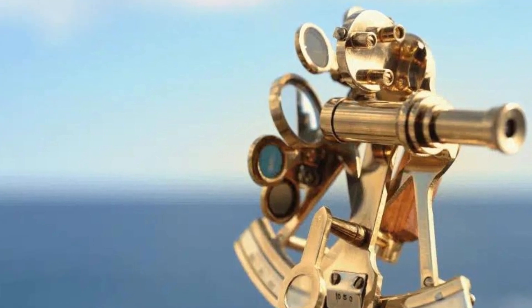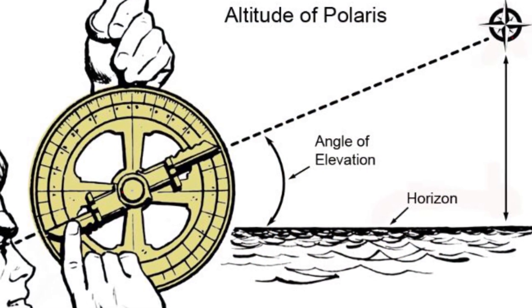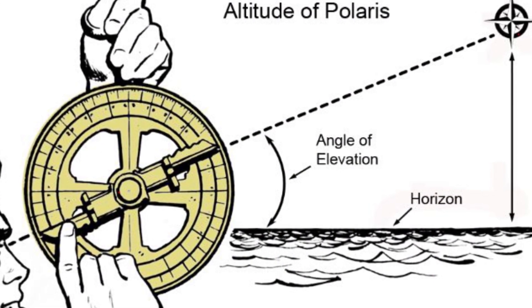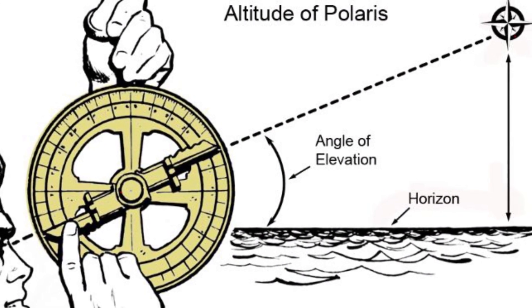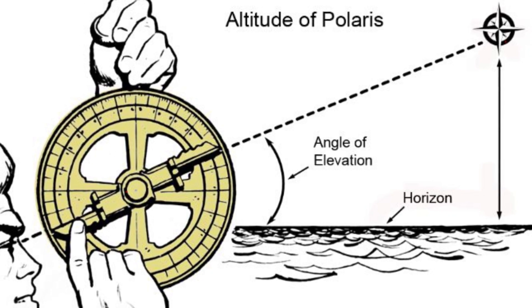We of course start with a sextant, which we can use to measure the angle from the horizon to the star. Then we calculate the distance using 1 degree per 69 miles, or 1 degree per 111 kilometers.